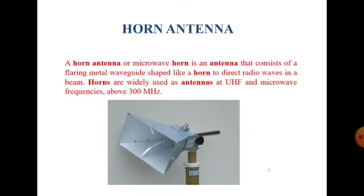First, what is a horn antenna? A horn antenna may be known as a flared-out or opened-out waveguide. A microwave horn is an antenna that consists of a flaring metal waveguide shaped like a horn to direct radio waves in a beam. Horns are widely used as antennas at UHF — that is, ultra high frequency — and microwave frequencies.